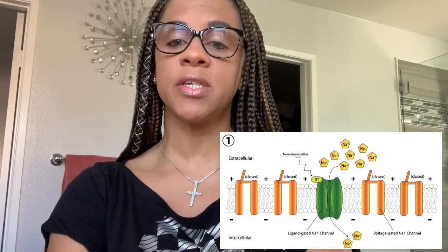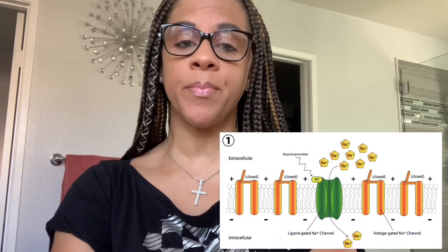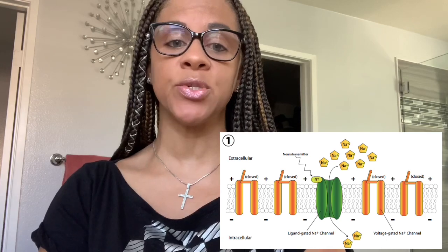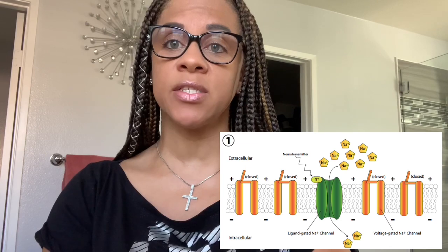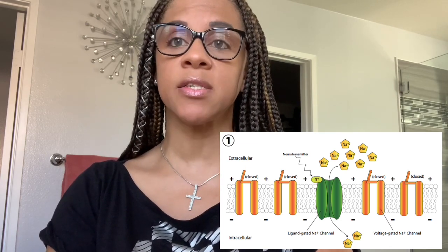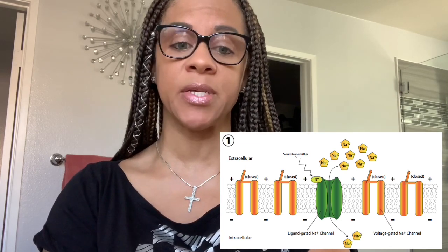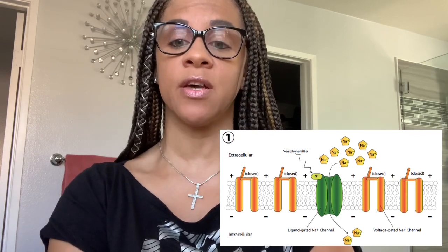Action potential occurs when a neuron sends information from the cell body. The action potential is an explosion of electrical activity that is created by a depolarizing current. During the action potential, part of the neural membrane opens to allow positive charged ions inside the cell and negatively charged ions out. This process causes a rapid increase in the positive charge of the nerve fibers.